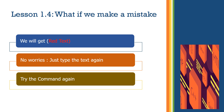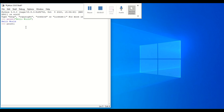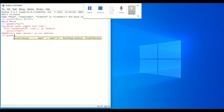What if we make a mistake? Well, nothing serious will happen — you will just get a red error message and you simply need to type it again. For example, if I type a wrong command like 'print one', the system will display an error in red saying 'print one is not defined.' To fix it, just retype the correct command and press enter.